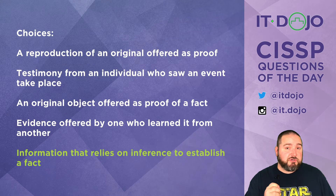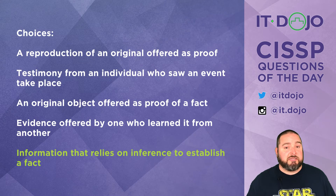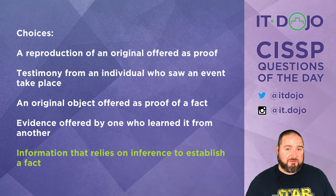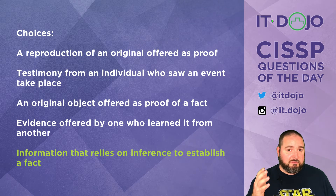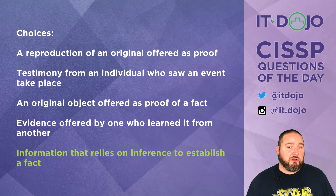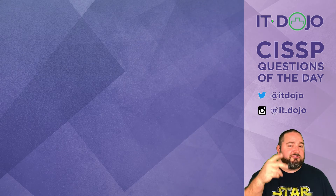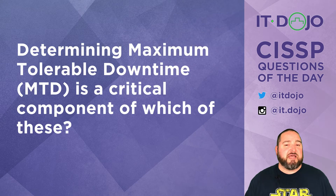From an exam perspective, make sure you understand what these different evidence types are. Spend a few minutes looking at the links below for examples. Most of us taking this exam are not attorneys, so we need to know the general nature of these things — it's going to help us approach security in our networks. Now, question number two: maximum tolerable downtime is a critical component of which of these?